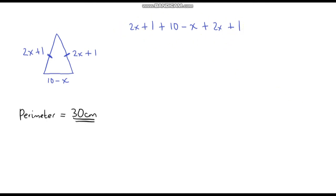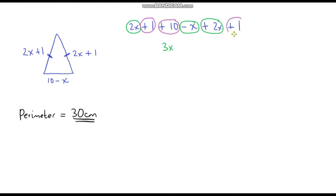Let's simplify. Looking at our x terms: we've got 2x, minus x — starting with 2x and taking away 1x leaves us with 1x — then adding another 2x takes us to 3x. Now for the numbers: plus 1 plus 10 gives us plus 11, plus another 1 gives us plus 12. So the expression, fully simplified, is 3x plus 12. But we know the perimeter is 30, so we set that equal to 30. Now we have an equation to solve.